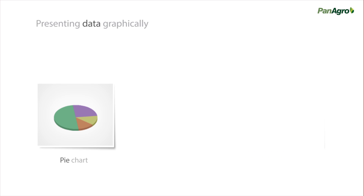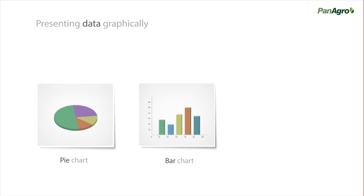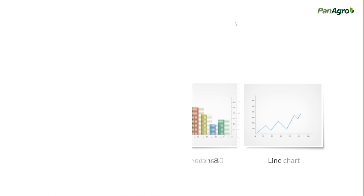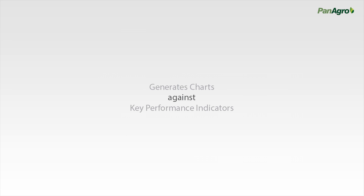The data can be presented graphically in a wide range of charts. This enables management to have a quick view of the performance of various divisions within the organization. Panagro GIS generates charts against a set of key performance indicators, or KPIs.